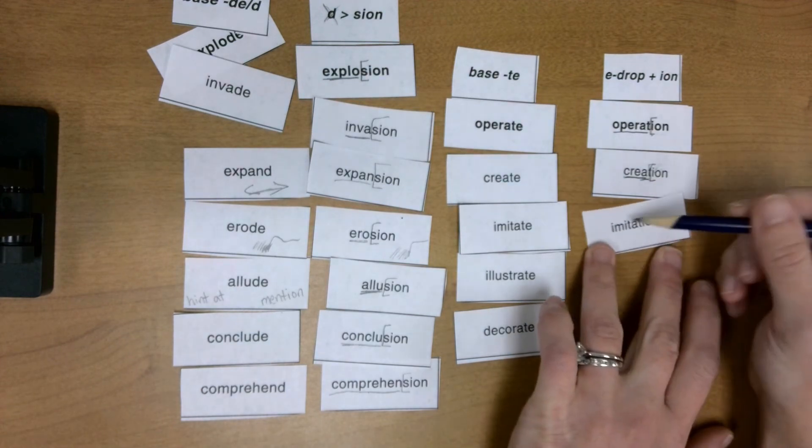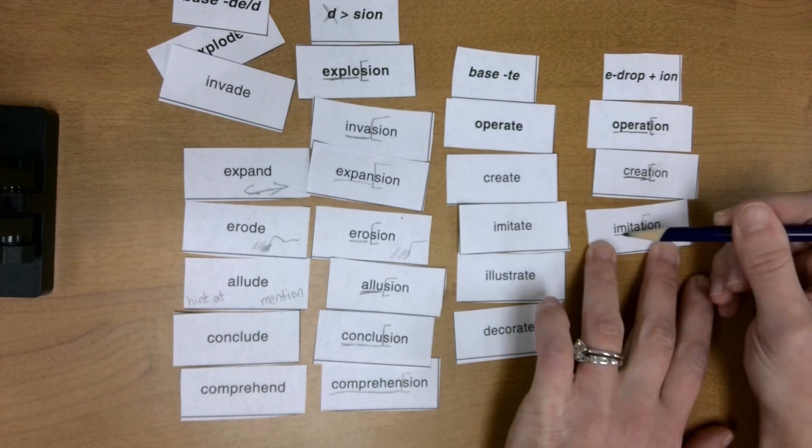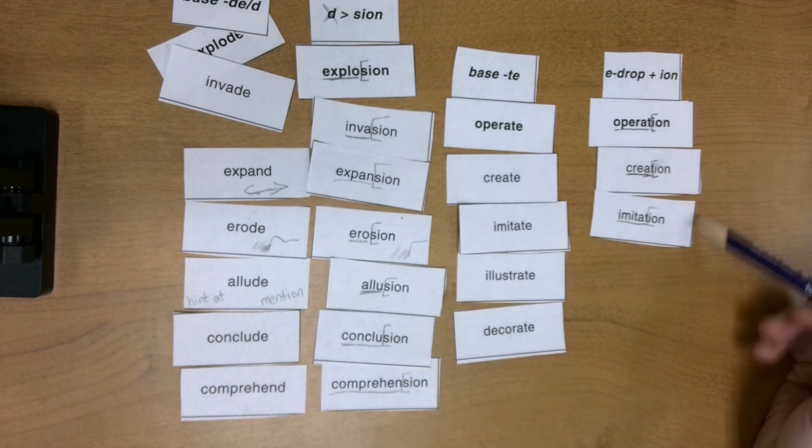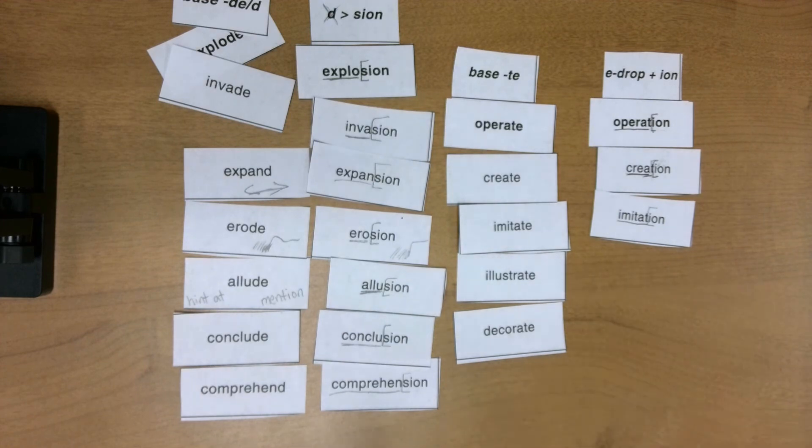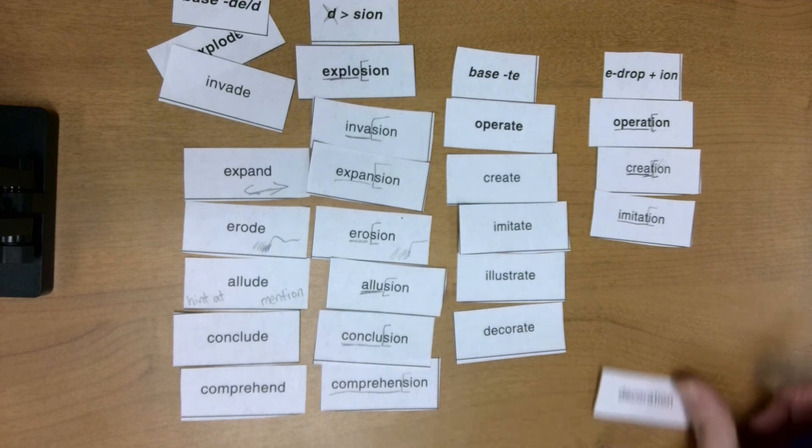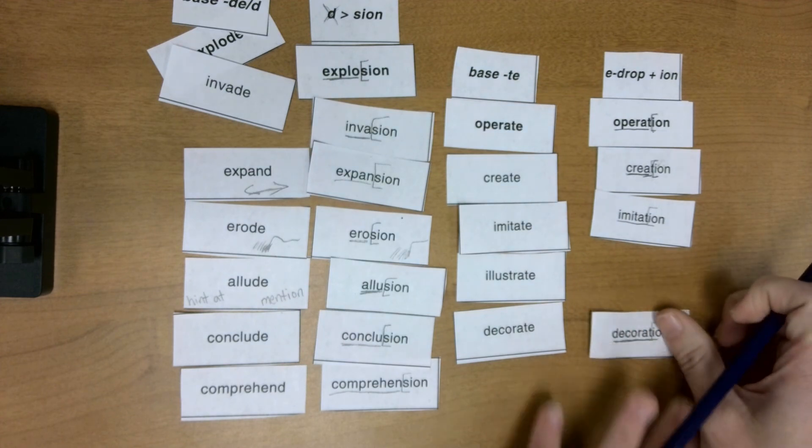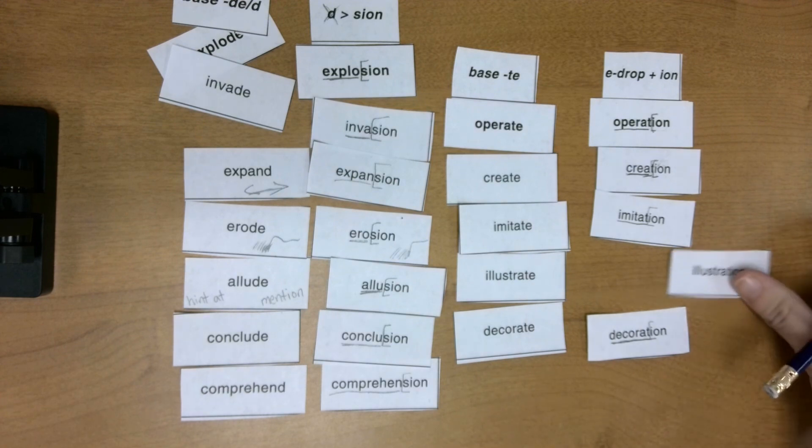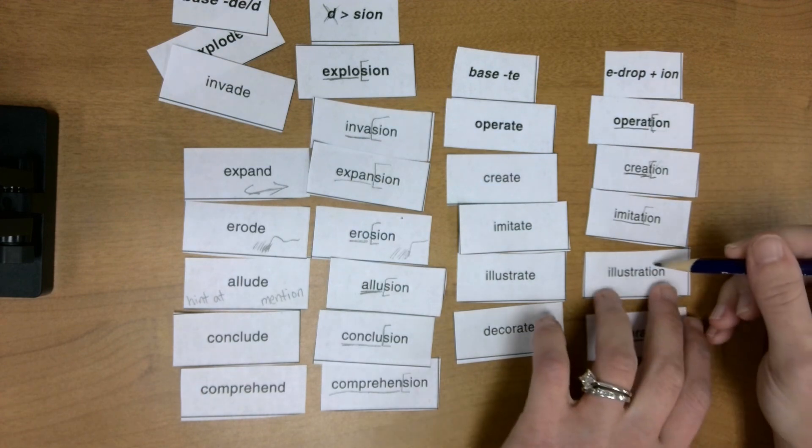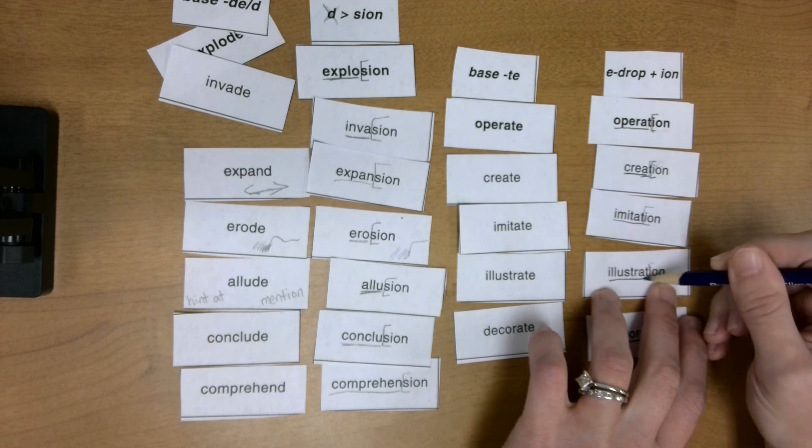Imitation. Take a look here. I-O-N. I see that E drop. Imitate is to copy, right? And the imitation. We've got some artwork out in our hallway right now that's a copy of something. So we've got some imitations out in the hallway. And decoration. I chop off that I-O-N. I see there's an E drop there. And then illustration. Chop off that I-O-N. And see illustrate.